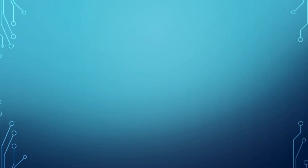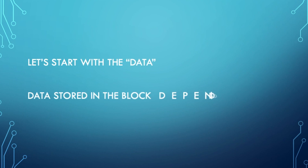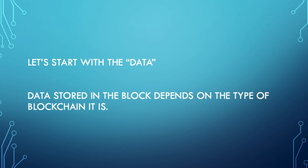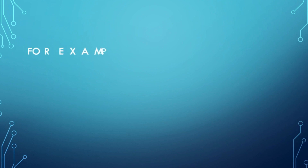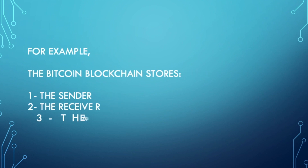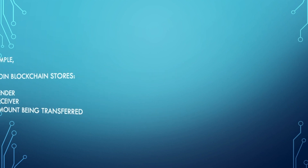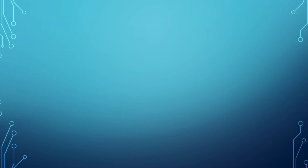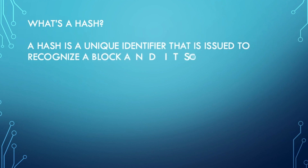Let's start first with the data. Data stored in the block depends on the type of blockchain it is — each type has different data stored. For example, the Bitcoin blockchain stores: one, the sender; two, the receiver; and three, the amount being transferred.